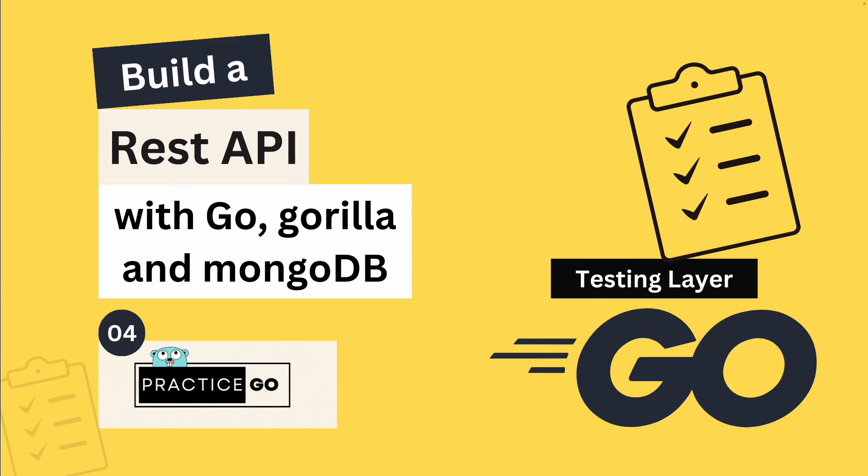Hello everyone, welcome back to Chapter 4 of Build a REST API with Golang, Gorilla, and MongoDB. This is the chapter in which we are going to test our data layer which we created in the last chapter. So let's get started.